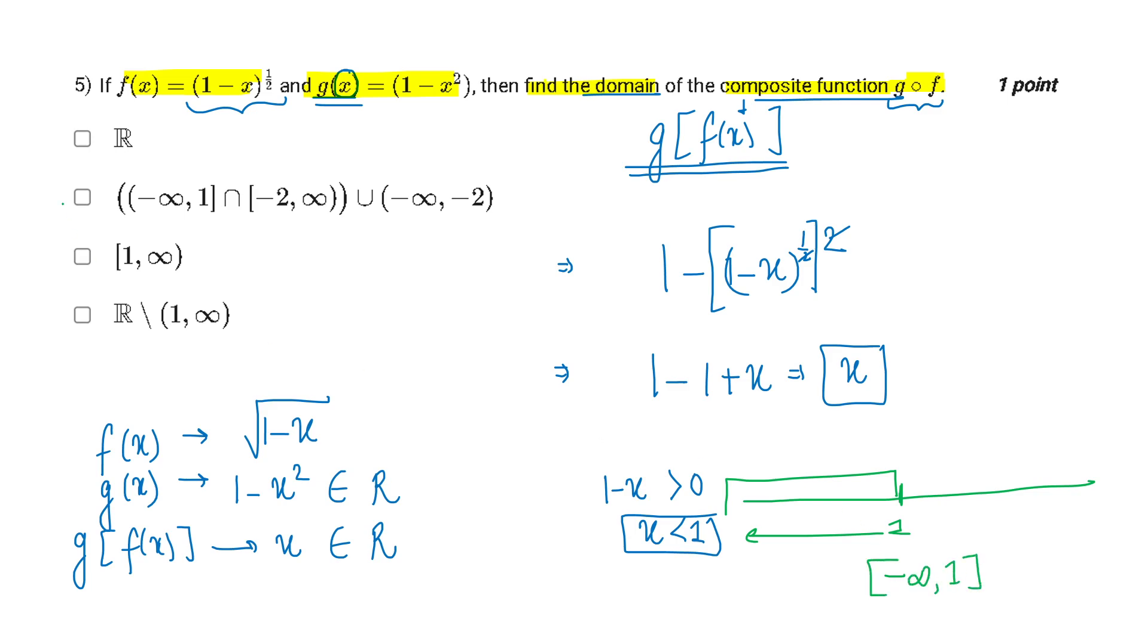So let's analyze the option. This gets rejected. This gets rejected kiunki mujhe minus infinity to 1 chahiye hai. 1 to infinity is what I have to reject.